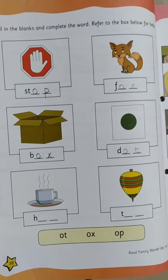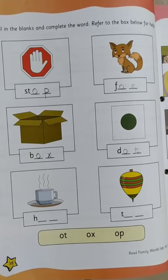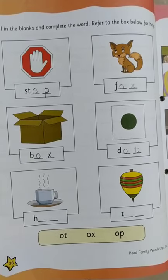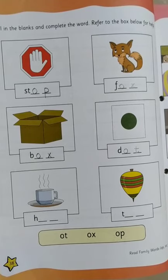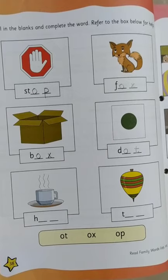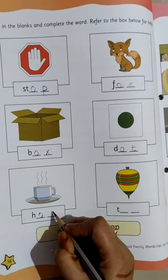Moving on to the fifth picture. Can you see the cup is steaming hot? With tea or coffee, we don't know. H is written. So what will we write? Ot. Hot. O and T.